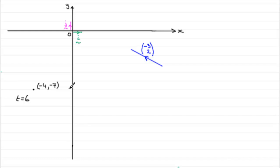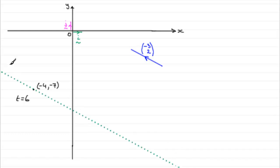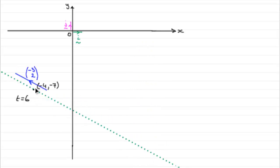Now if this particle is moving with this velocity, it means it must have been coming along a path that's parallel to the velocity vector, passing through this point. The question they're asking is: where was the particle when t was two, and how far is that from the origin O?